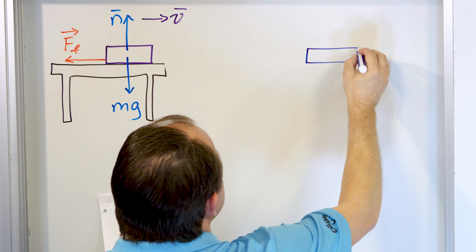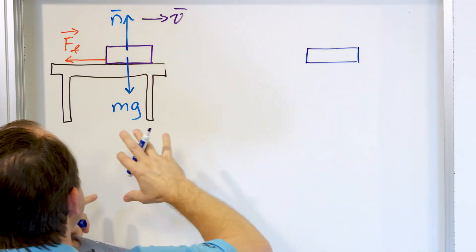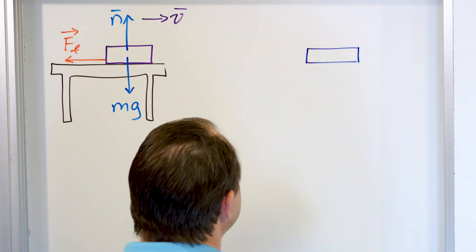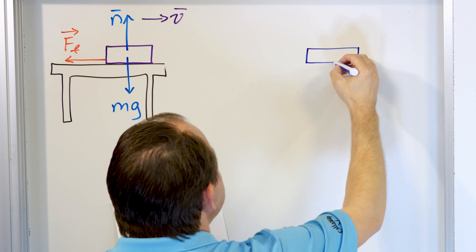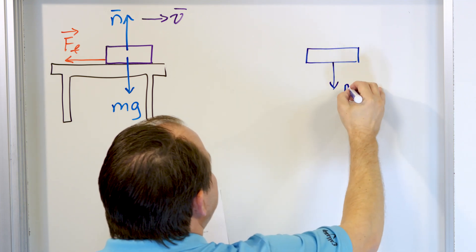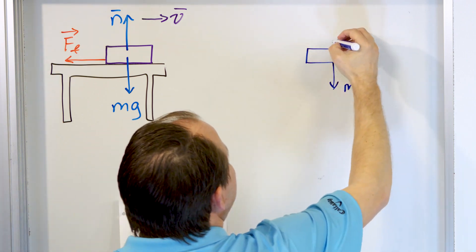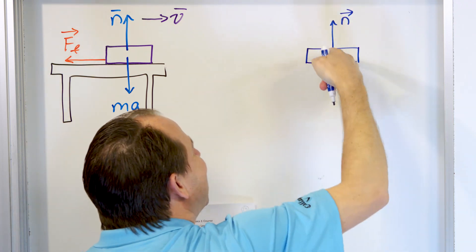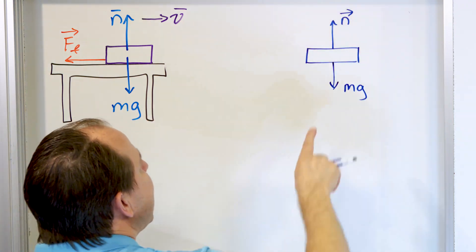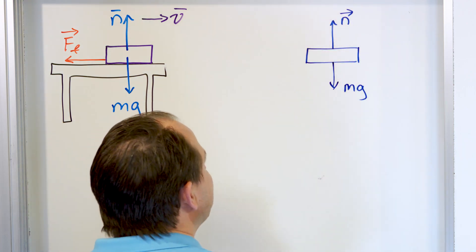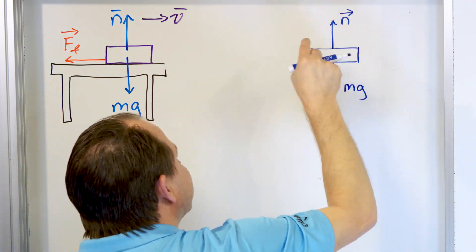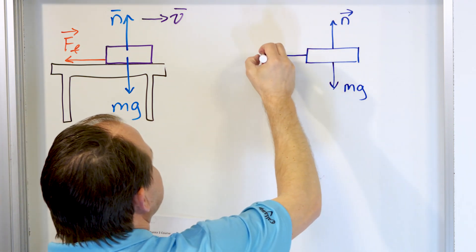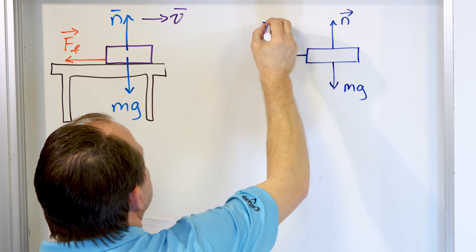Let's translate this diagram to a true free body diagram. We draw the same book but remove the table, the planets, the stars, the galaxies, the air — everything is gone. The only thing we care about is the object itself. Acting down is a weight, which is mass times gravity. Acting upward is the normal force — the earth is pulling the book down, and the table is pushing up on the book. Then we have a frictional force pointing to the left.